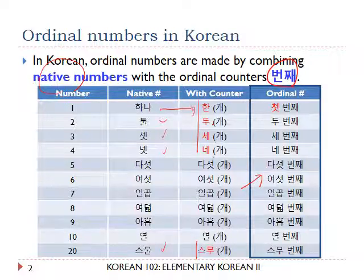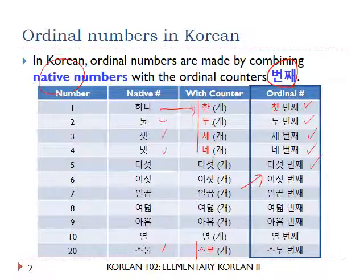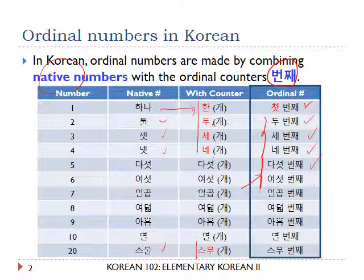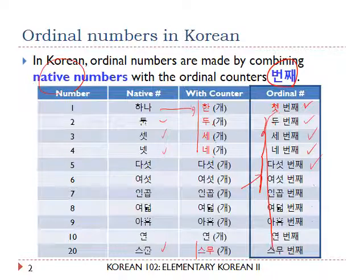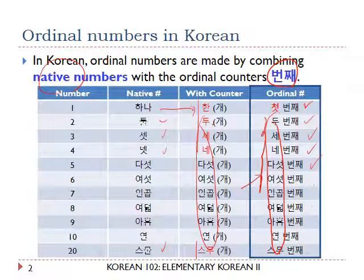First, second, third, fourth, fifth, and so forth. As you see here, 두 번째, 세 번째 — so from the second onward, the form of the native number is the same as the form when they are followed by the counter.